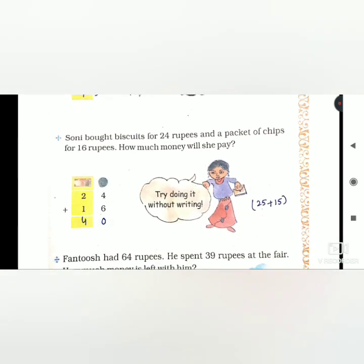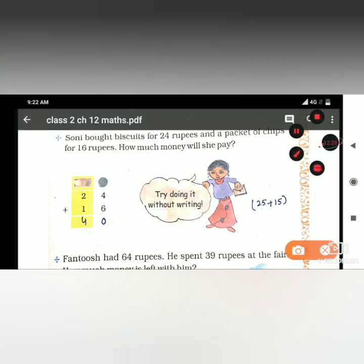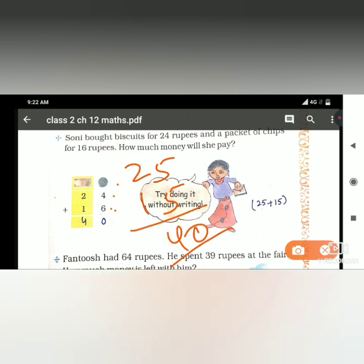Soni bought biscuits for 24 rupees and one chips packet for 16 rupees. How much does she have to pay? We do 24 plus 16. 6 plus 4 is 10, write 0 here and carry 1. 2 plus 1 plus 1 is 4. Answer is 40 total.